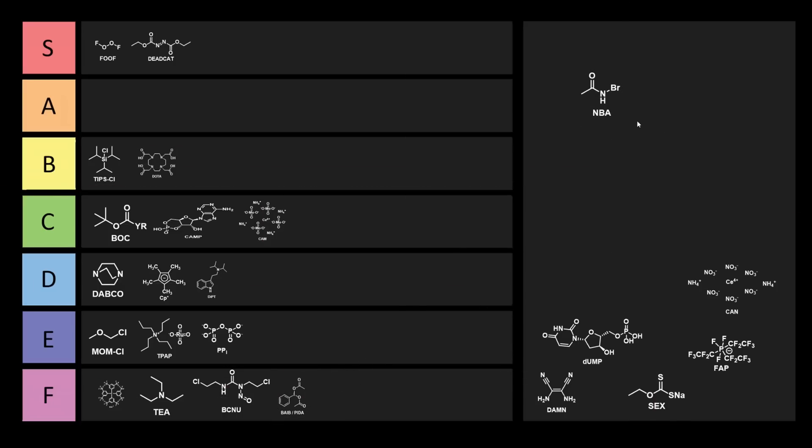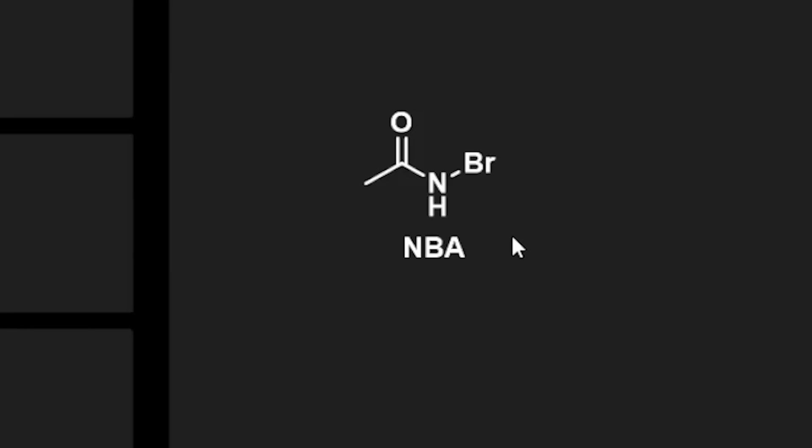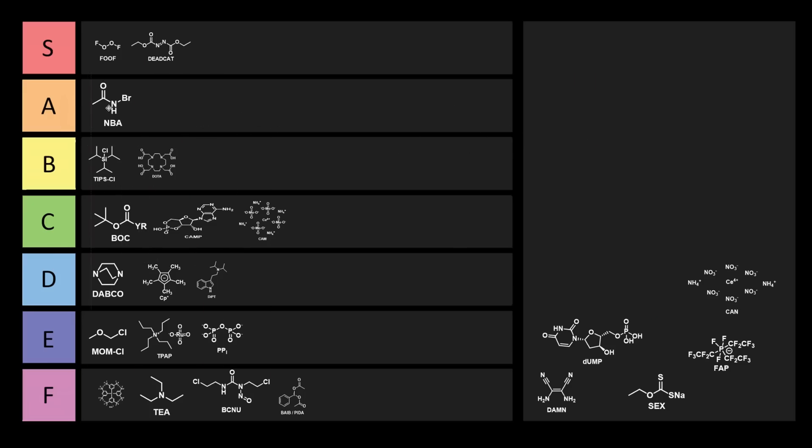Okay, we have NBA, N-bromoacetamide. This is an electrophilic brominating agent occasionally used in organic chemistry, and this is a ballin reagent. So why don't we put this one into A tier?